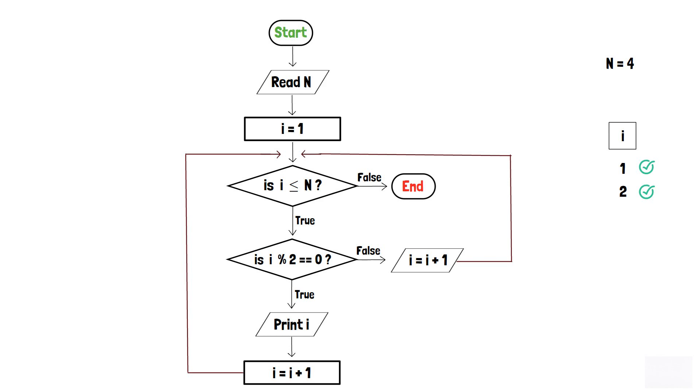In this instance, 2 modulo 2 equals to 0. So, i, which is 2, is printed. Then, i is increased by 1, which becomes 3.